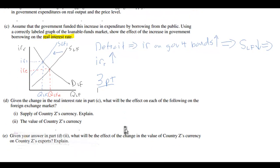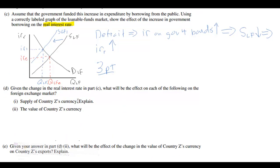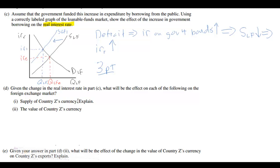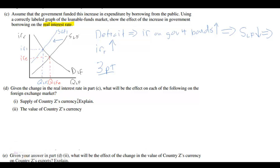Let's move on to part D. Part D says: given the change in the real interest rate in part C, what will be the effect on each of the following in the foreign exchange market — the supply of country Z's currency and the value of country Z's currency? These questions are most likely worth two points for part I and one point for part II, because part I asks for an explanation but part II does not. This part doesn't require a graph, but I'm going to draw one anyway.